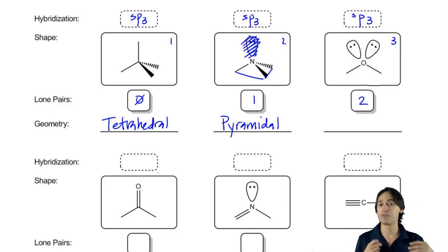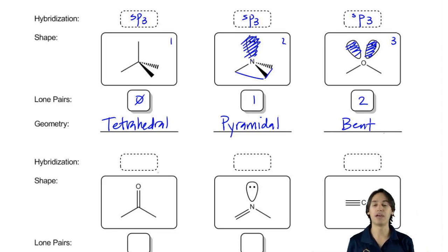And then finally, what if we have two lone pairs? That means there's even less that I can see. So when I'm just looking at this, all I see is something that is bent. So bent would be the name that I give to it when there's two lone pairs. Is that cool so far?